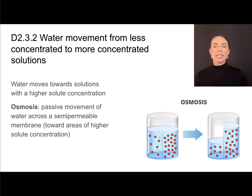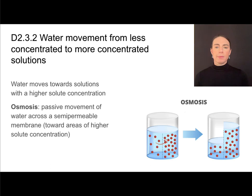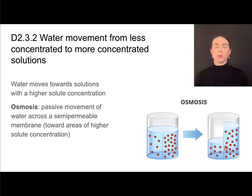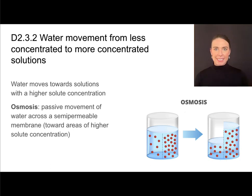If these red things are solutes and they cannot cross this membrane, some of these water molecules will cross the membrane and come over to this side until these are of equal concentration. The solute amounts aren't equal, but the concentrations are equal — and that's what osmosis is.